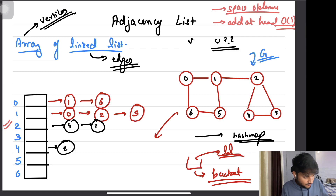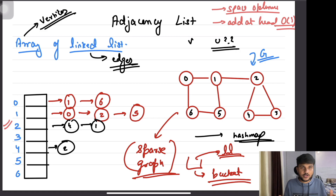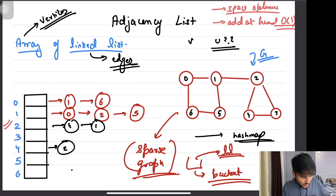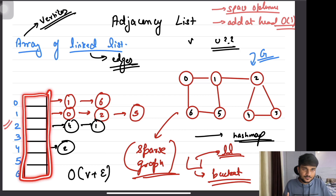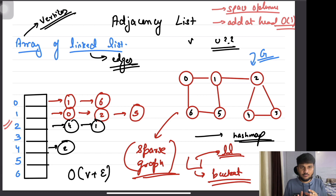The main benefit of an adjacency list is it works tremendously well in terms of space for sparse graphs. Sparse graphs are those which don't have a lot of edges. With fewer edges, the linked lists are not very large, and the space taken is O(V + E): a V-length array represents all vertices, and the total nodes across all linked lists equals the number of edges — or twice the edges for an undirected graph. So the space is O(V + E).